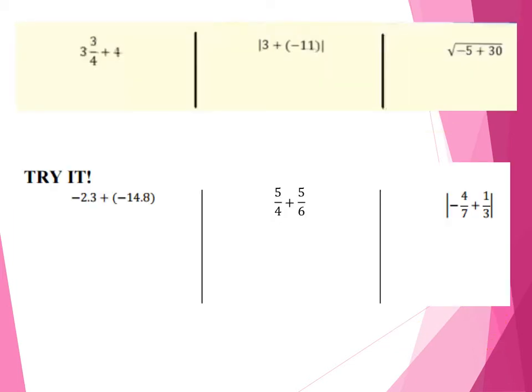Let's go ahead and do some more examples. Now we're going to combine some things we talked about in the previous lesson. First one, I have 3 and 3 fourths plus 4 — a mixed fraction plus a whole number. What I suggest you do is write this as an improper fraction. Here's the process: we're going to start by taking 4, multiply that by 3, and then add whatever's on top. So 3 times 4 is 12, add 3 gives me 15 over 4. Add to that 4.